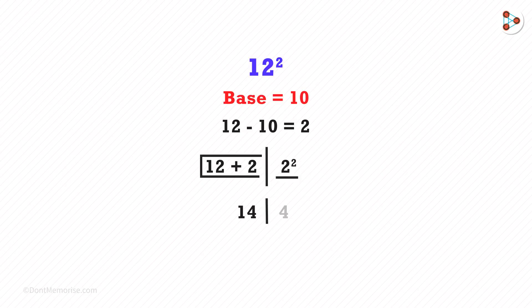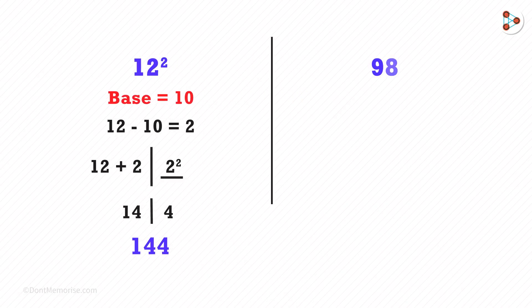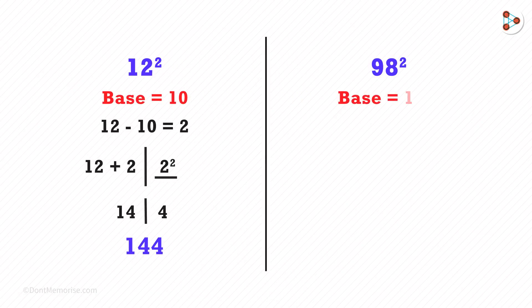On the left, we have 14, and on the right, we have 4. We get the answer as 144. How do we find 98 squared? Here, the base is 100, and 98 minus 100 is negative 2.